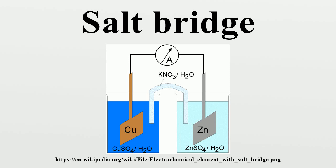the solution in one half-cell would accumulate negative charge and the solution in the other half-cell would accumulate positive charge as the reaction proceeded, quickly preventing further reaction and hence production of electricity.